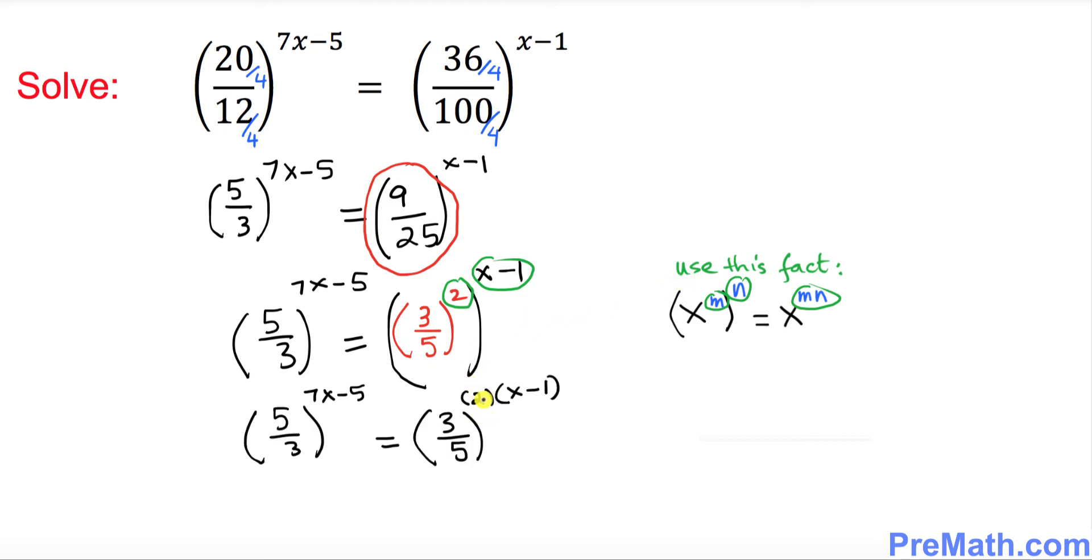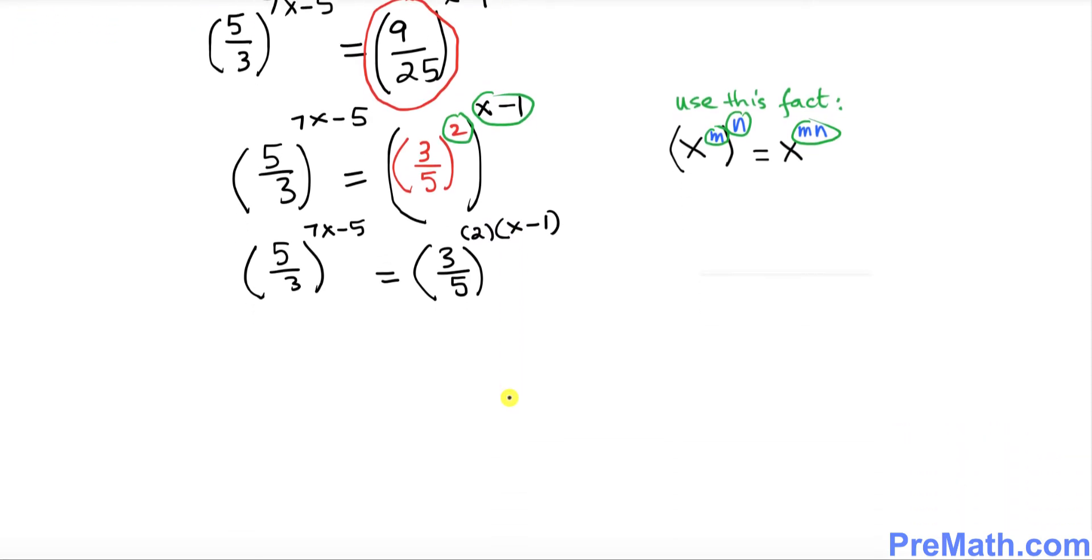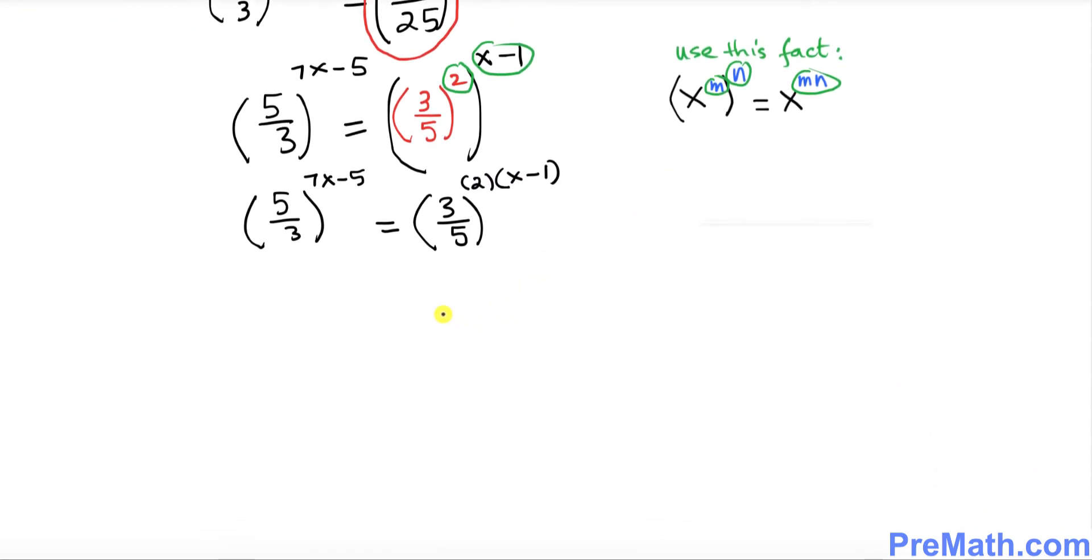Here I multiplied these two exponents out. Now let's distribute this. So 3 over 5 to the power - when you distribute - becomes 2x minus 2. On the left hand side we still have 5 over 3 to the power 7x minus 5.